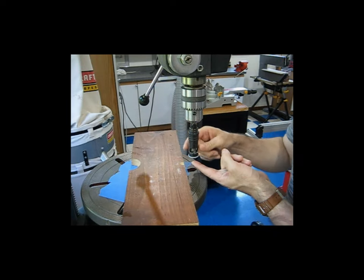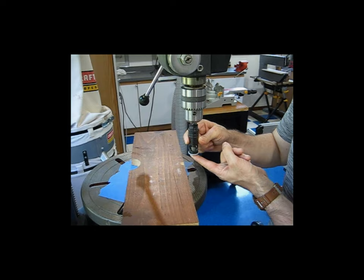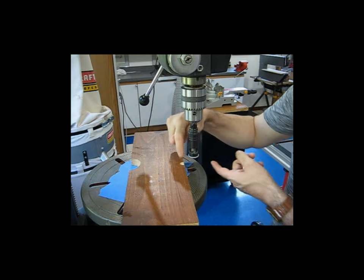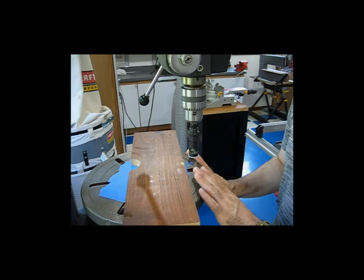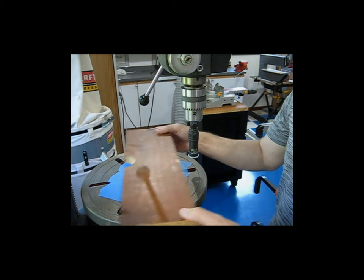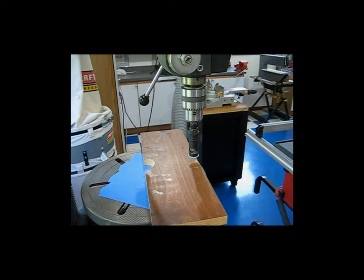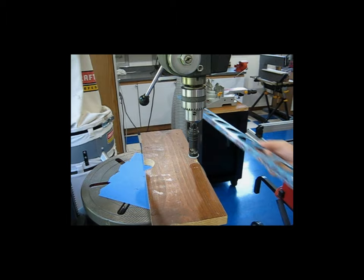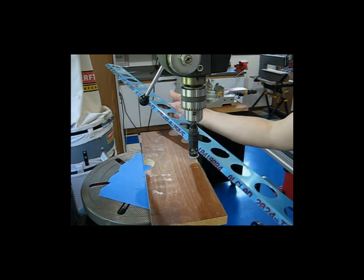And that just gives the guide pin of the countersink on the microstop clearance to go down into. I've got the table of the drill press pushed back. You put your wood in place. Here's the panel. This is the flap filler panel.